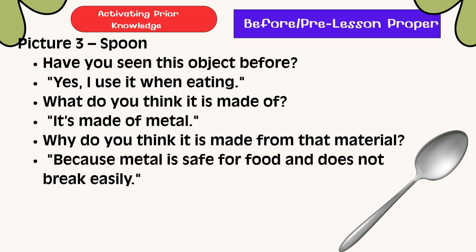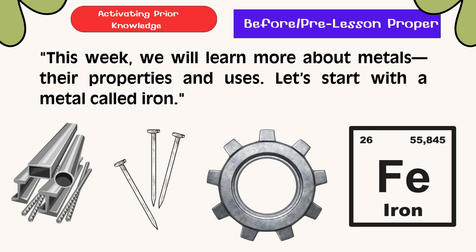Picture 3: Spoon. Have you seen this object before? Yes, I use it when eating. What do you think it is made of? It's made of metal. Why do you think it is made from that material? Because metal is safe for food and does not break easily. This week, we will learn more about metals, their properties and uses.